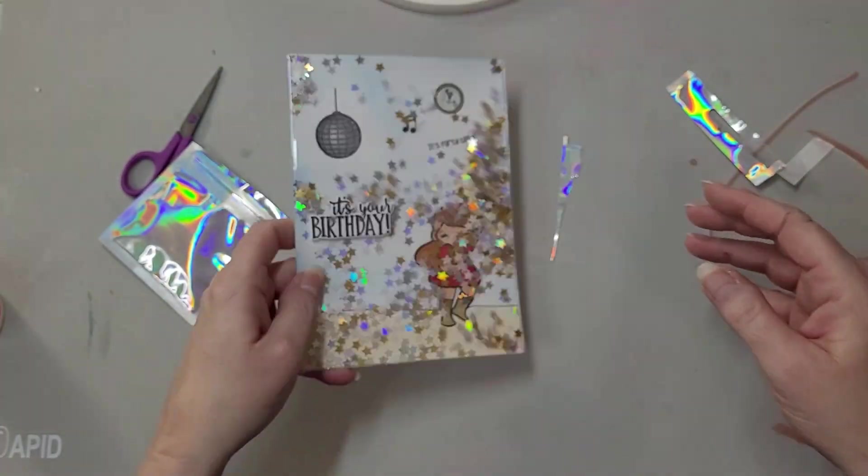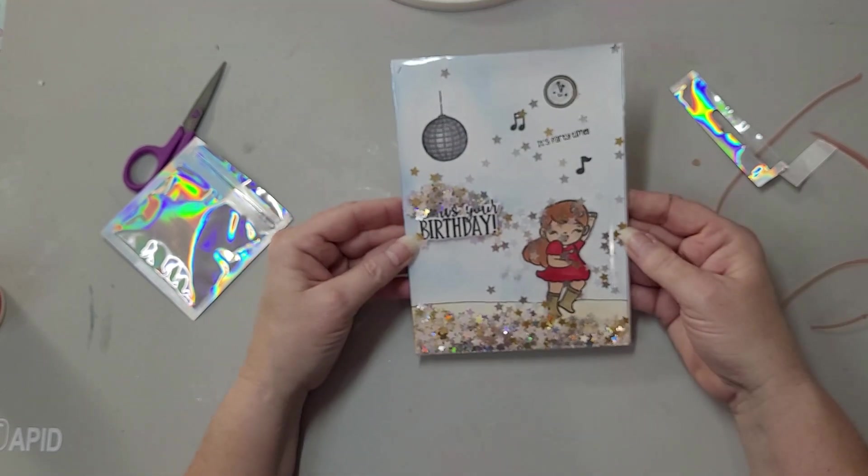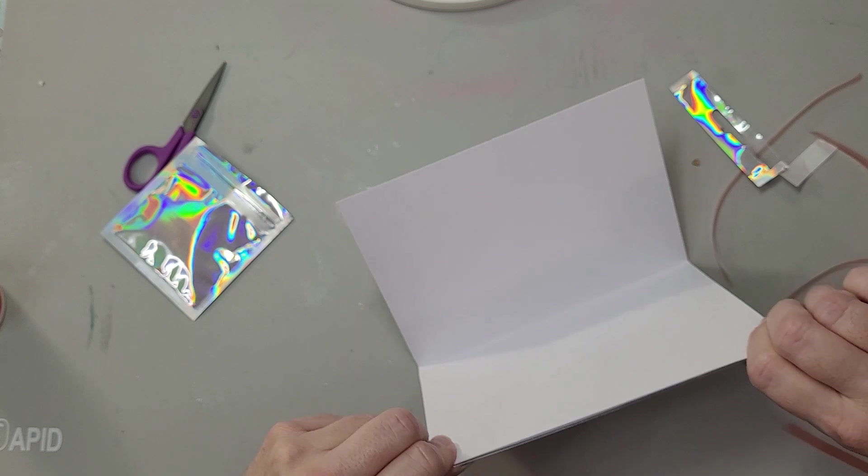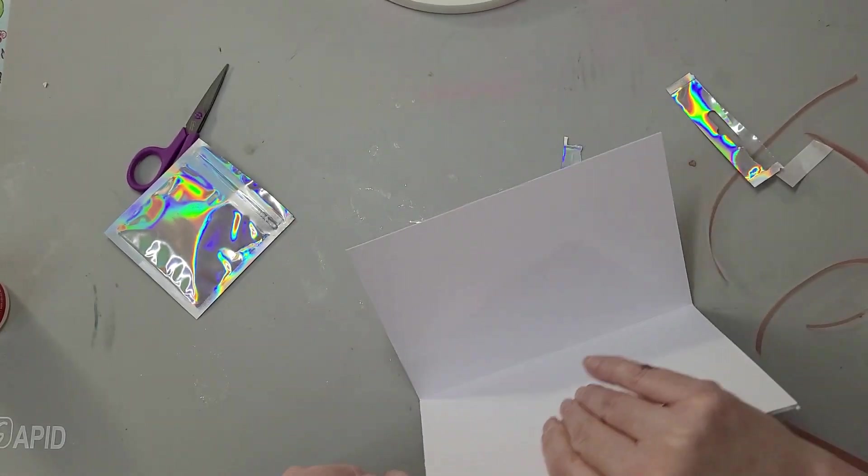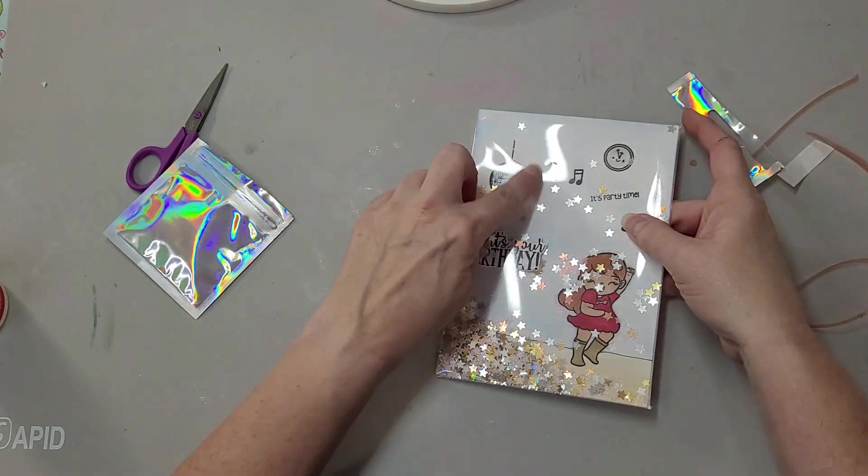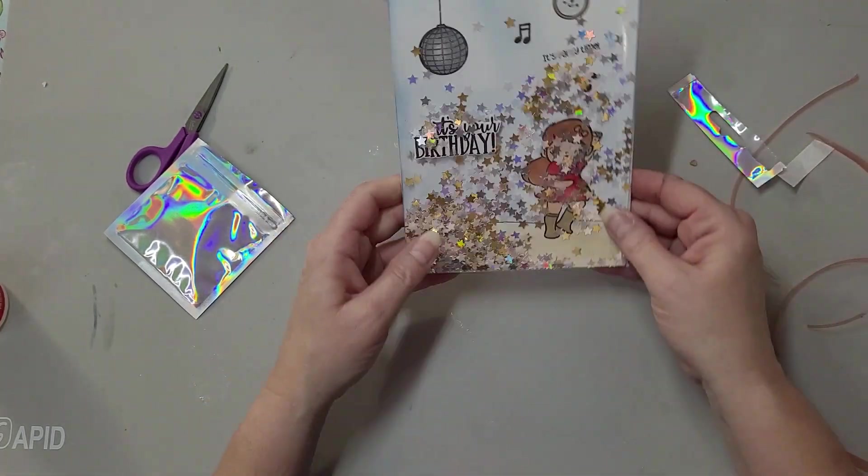And there you have it, an all-over shaker card. And then on the inside we'll just put whatever we want. Now I think I probably would maybe stamp some of the notes or even put another disco ball on the inside with the happy birthday message. But that is it.